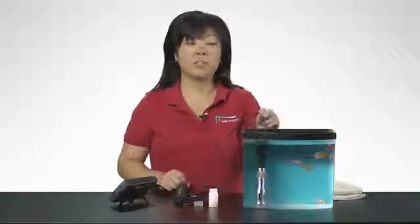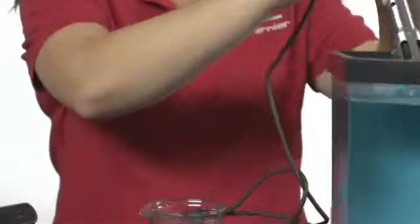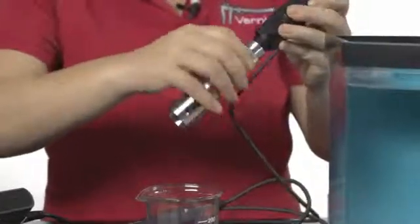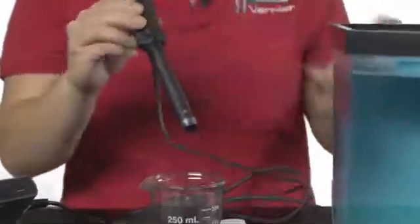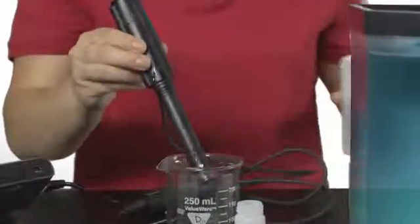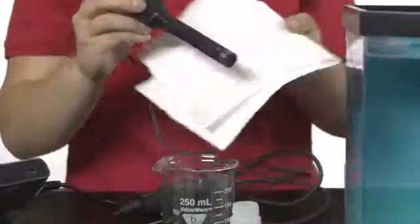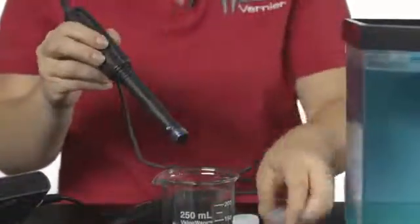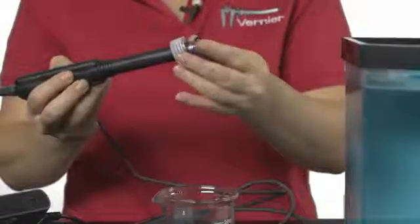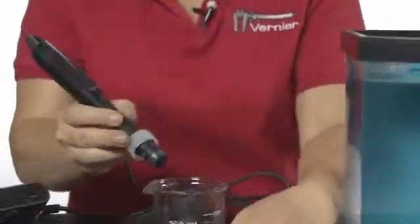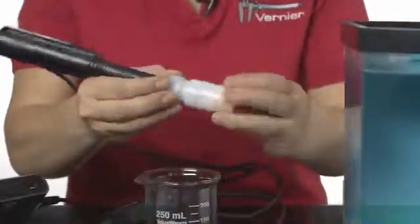When you have finished using the optical DO probe, rinse the tip with distilled water and gently blot dry. Place the optical DO probe back into the storage bottle and tighten.